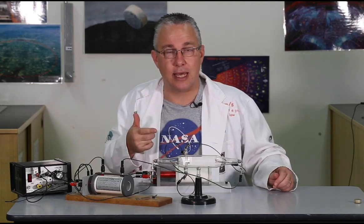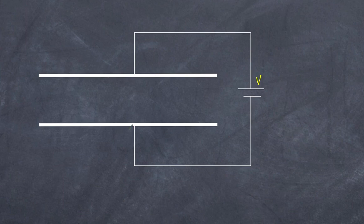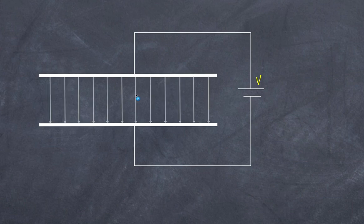Why did that happen? Let's find out. Here we have two plates set up with a potential difference V. Between these two plates you're going to set up a uniform electric field. We're going to separate them by a certain distance, like so.